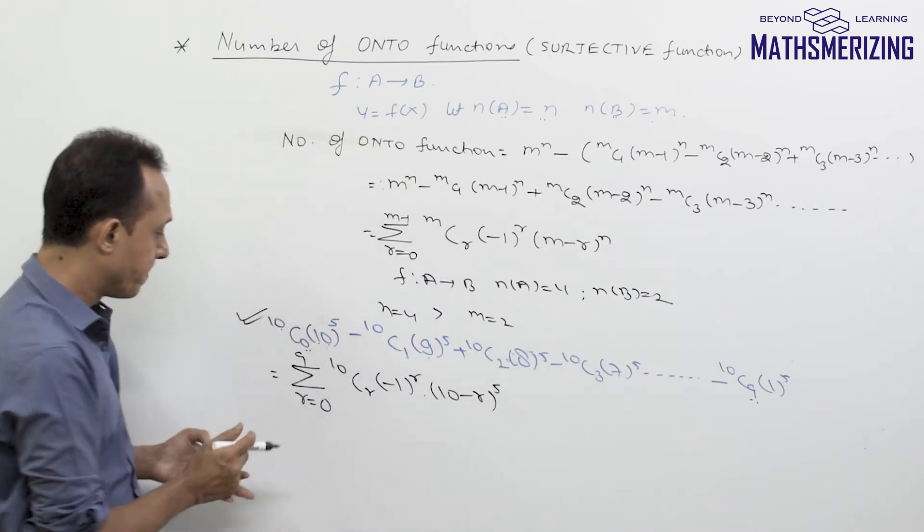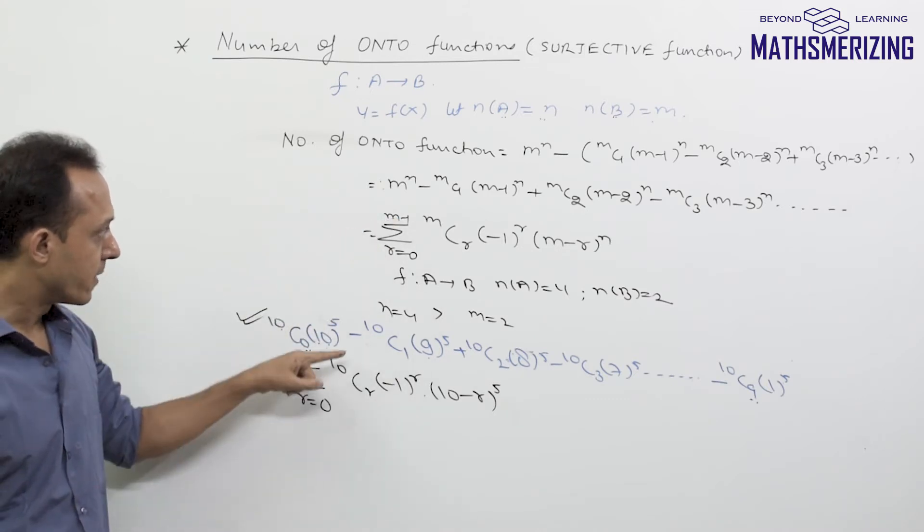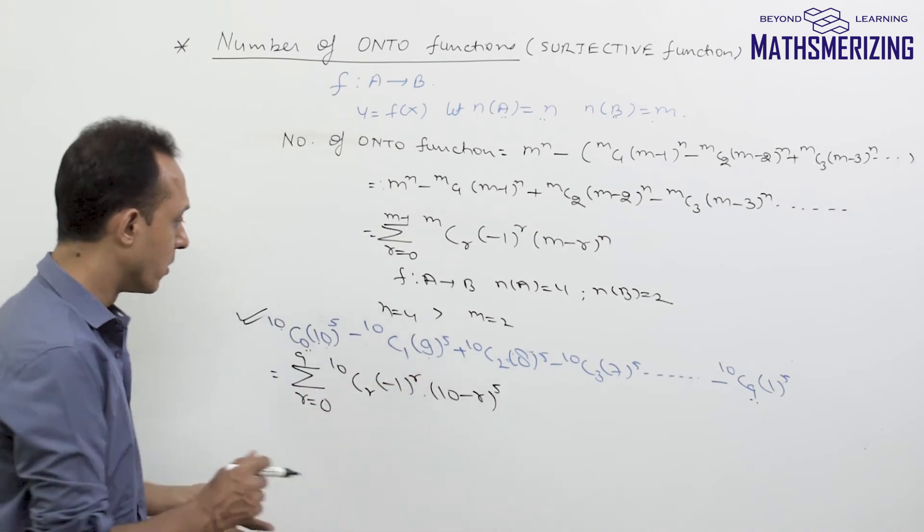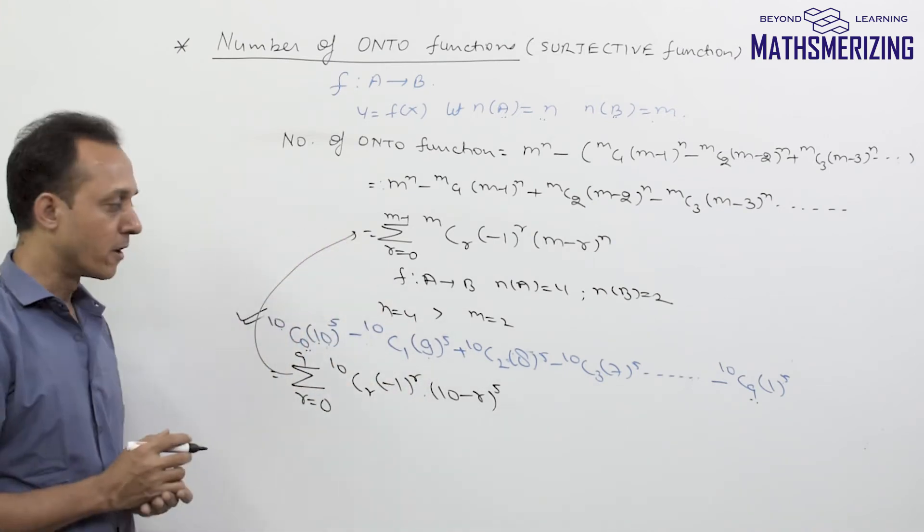Now if I compare it to this formula, r varies from 0 to 9 which is m minus 1, and then it should be m and n here. So clearly this formula is related to the formula for number of onto functions.